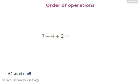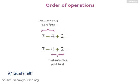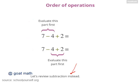Suppose you want to evaluate 7 minus 4 plus 2. You can go ahead and evaluate the 7 minus 4 first, and then add 2. But someone else doing this problem might first add the 4 and the 2 and subtract that from 7. Try evaluating this expression these two different ways and see what you get.